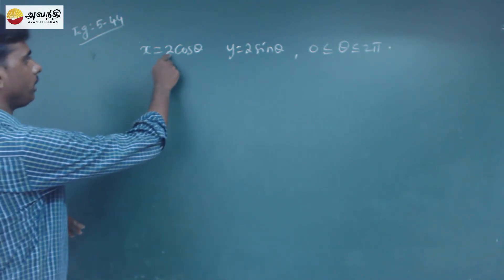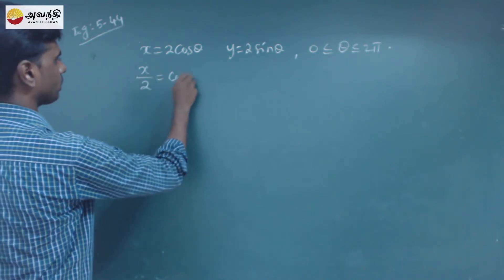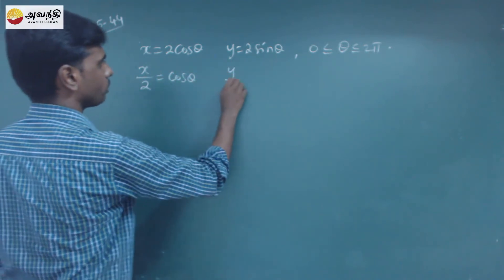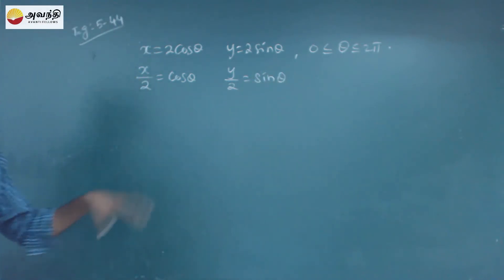First, we have to do this. That is, x by 2 is equal to cos theta, and y by 2 is equal to sin theta. So we have to do a Cartesian method.